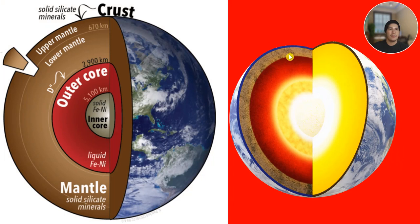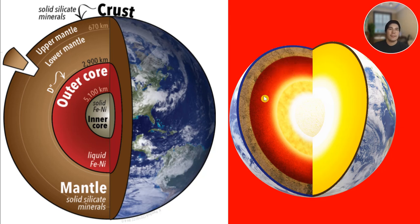The upper mantle extends to about 6,700 kilometers. We have the lower mantle at about 2,900 kilometers depth, and we also have the outer core and the inner core.